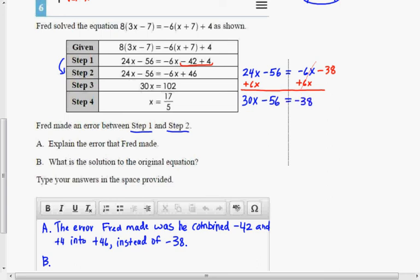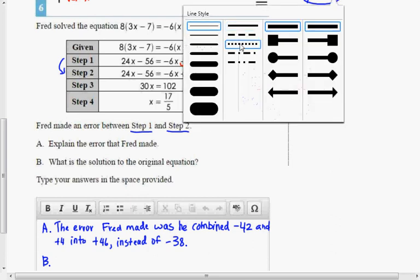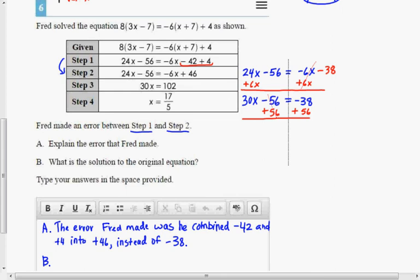And so now I'm going to add 56 on both sides. And that comes out to 18, positive 18.